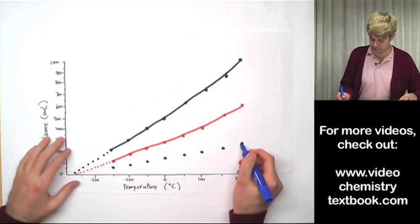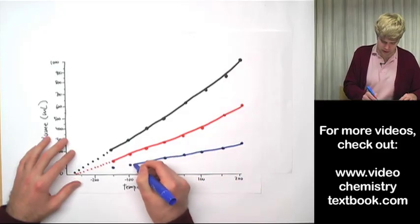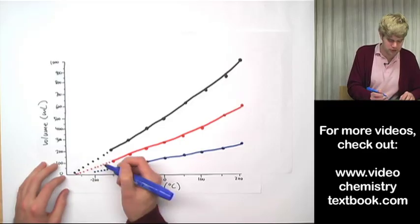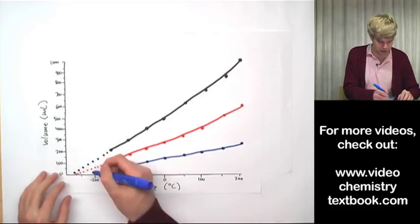Let's do the same thing with the blue here for a really small balloon. Its volume decreases as we lower the temperature. And then we get to a point where we can't get it any colder but we can continue the line. We can extrapolate. Remember that word. It's a really good word to use. We can extrapolate.